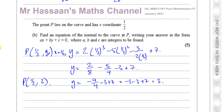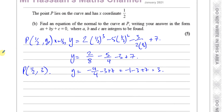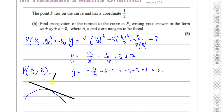Now we want to find the equation of the normal to the curve at P. A normal is a straight line. If you have a tangent to the curve at a point, the normal is perpendicular to that tangent. So if the tangent has a certain gradient, the normal will have a gradient perpendicular to it. The product of the gradients of two perpendicular lines equals minus 1.